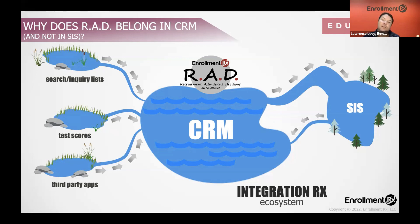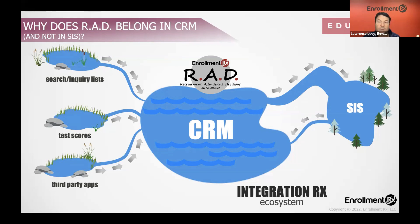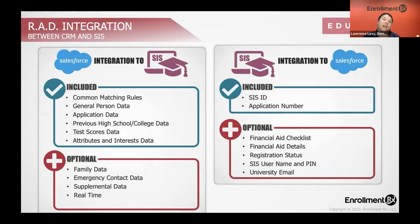And then only sending admitted student data, ideally, over to the student information system. So when we talk about that data exchange on the right-hand side — where we're sending data to the SIS and bringing data back from the SIS — that's the enterprise integration. When we speak to schools, we describe that type of integration from a recruitment and admissions perspective to include the following.